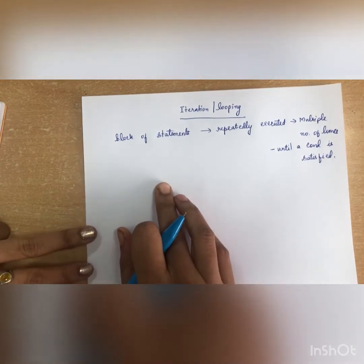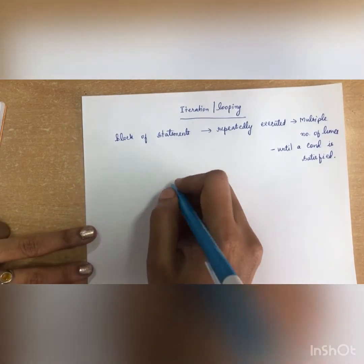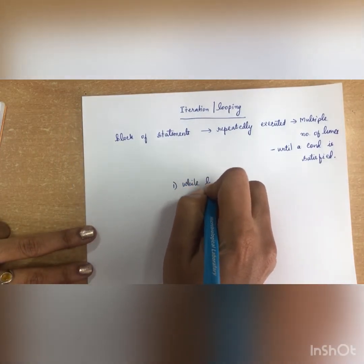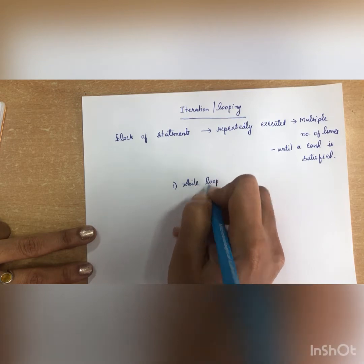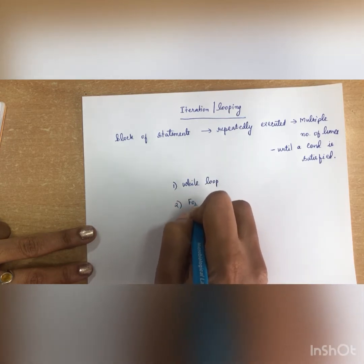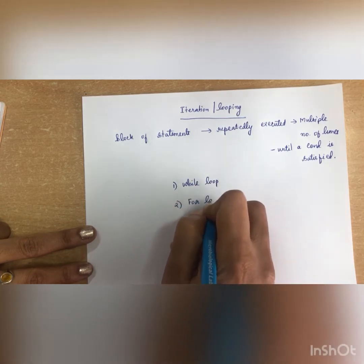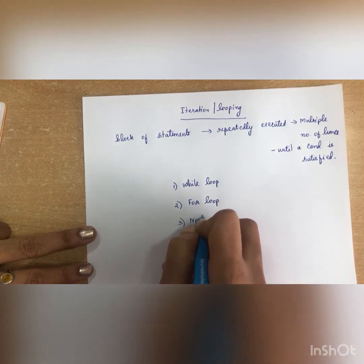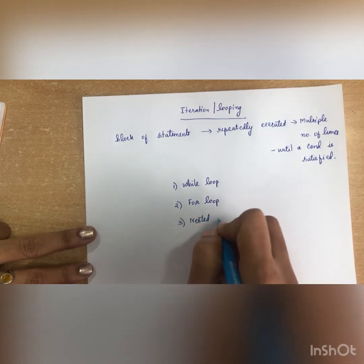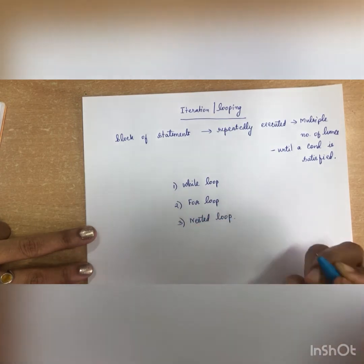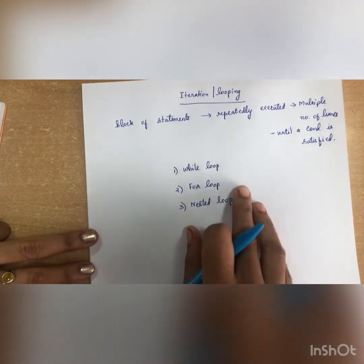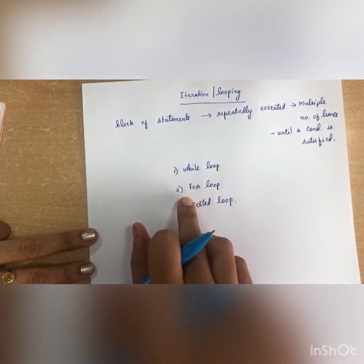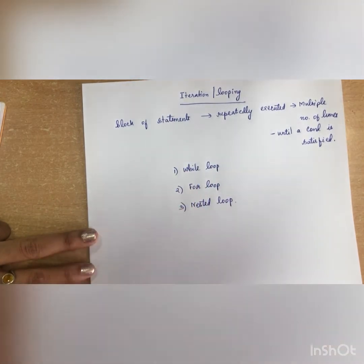There are three types of iteration. One is while loop, the second one is for loop, and the third is nested loop. These are the three looping statements you can use in Python.